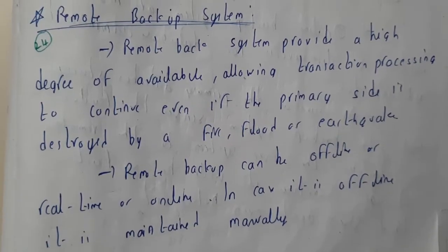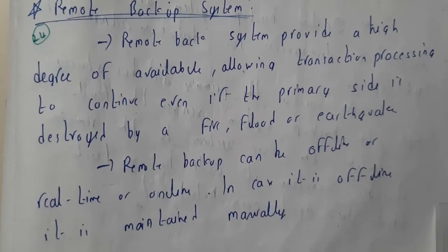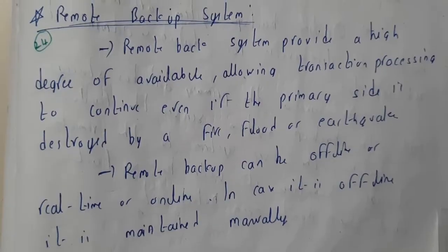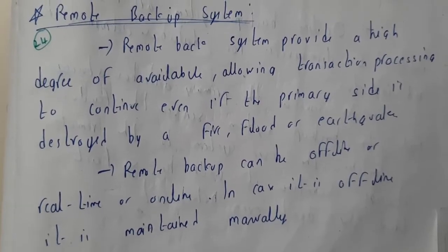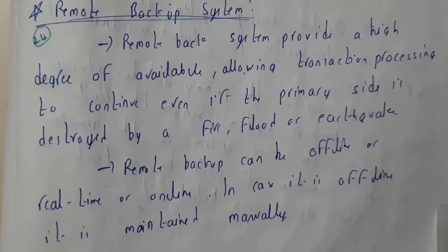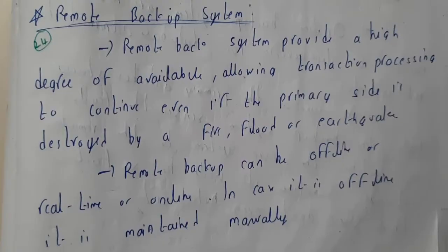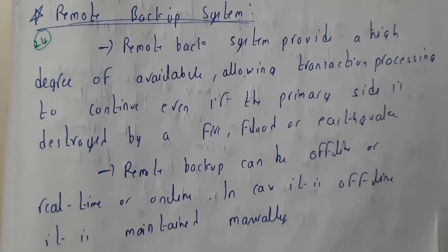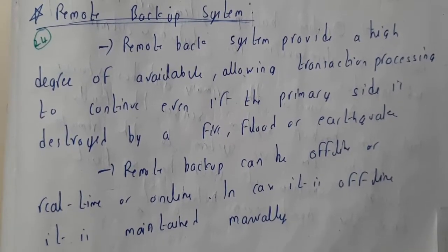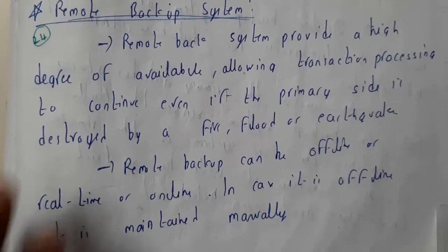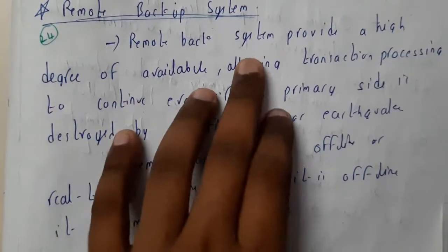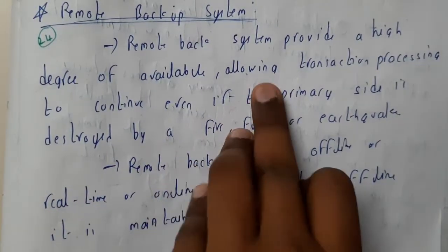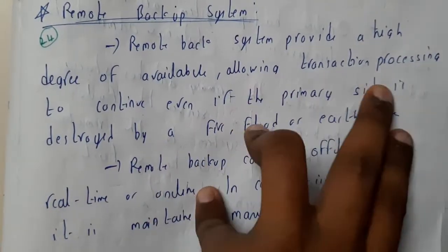Hello guys, we are back with our next tutorial. In this tutorial let us go through remote backup systems. Basically, backup means saving your files, personal data, or records in some particular safe place — like a second copy. Remote backup systems provide a high degree of availability, allowing transaction processes to continue even under failure conditions.